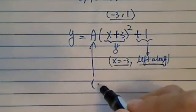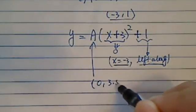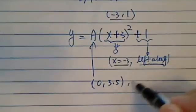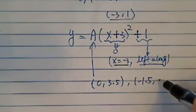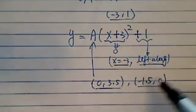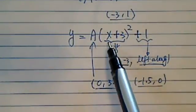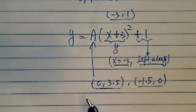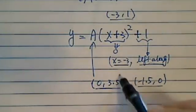Since we're given a couple points here, we have 0, 3.5. It's a good one to use. Minus 1.5 and 0, this is not as easy to use because we want to use x equal to 0 to make the calculation easier. We don't want to solve for A with too much work. So let's try this point.